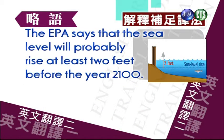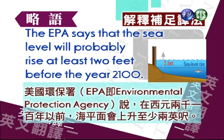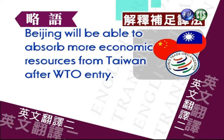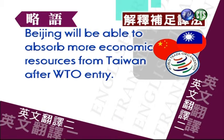The EPA says that the sea level will probably rise at least two feet before the year 2100. 美国环保署EPA即Environmental Protection Agency说，在西元两千一百年以前，海平面会上升至少两英尺。